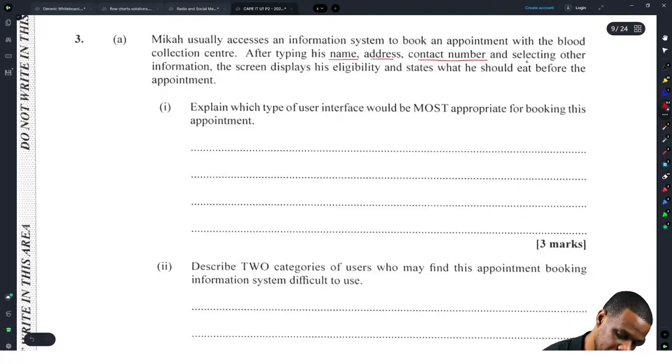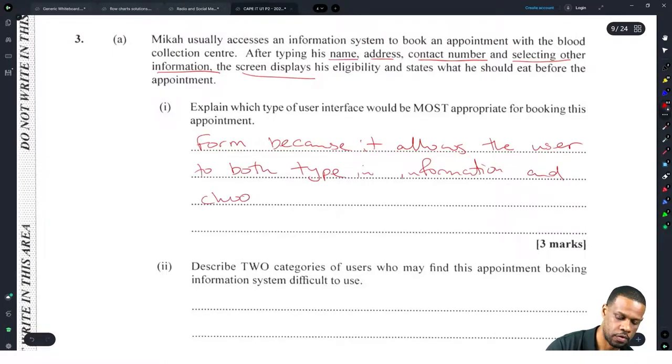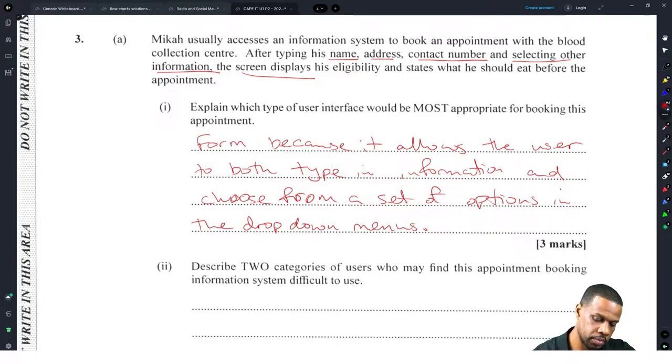That sounds like it's a form interface. So there's a form interface because it allows the user to both type in information and choose from a set of options in the drop-down menu. Yes, I like that. Because it said select other information, so that's selected information. Selection should kind of be a form.